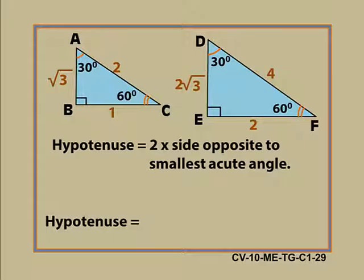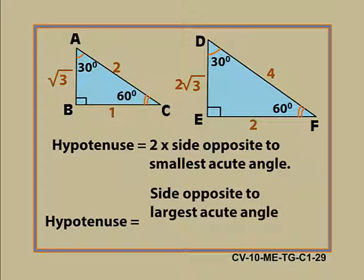Yes, hypotenuse can also be obtained by multiplying the side opposite to largest acute angle by 2 and then dividing the product by root 3. Hence,